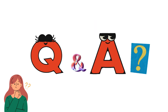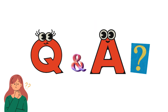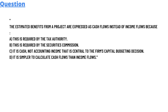Today's question is: the estimated benefits from a project are expressed as cash flows instead of income flows because — option A: this is required by the tax authority; option B: this is required by the securities commission; option C: it is cash, not accounting income, that is central to the firm's capital budgeting decision.